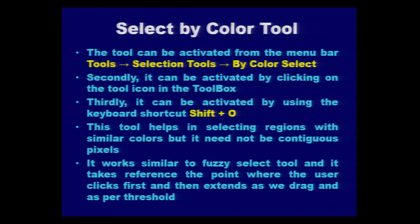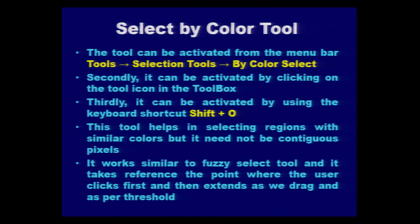The next tool is the Select by Color tool. It can be activated from the menu bar by clicking on Tools, then Selection Tools, then 'By Color Select.' It can also be activated by clicking the tool icon in the toolbox, or by pressing the keyboard shortcut Shift+O.